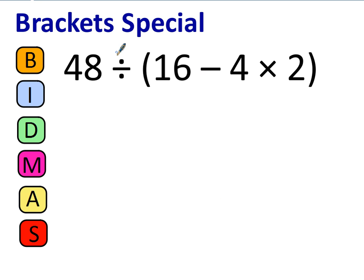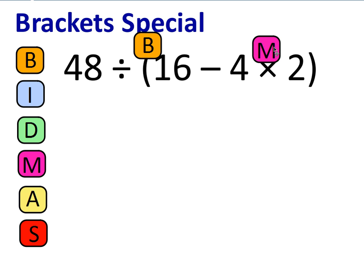Here's another example: 48 divided by bracket 16 take away 4 times 2. If you've got more than one operation inside the brackets, apply the order of BIDMAS. Looking at the brackets, we've got a multiplication and a subtraction. The multiplication is the more important of those two, so I'll need to evaluate that first. 4 times 2 is 8.